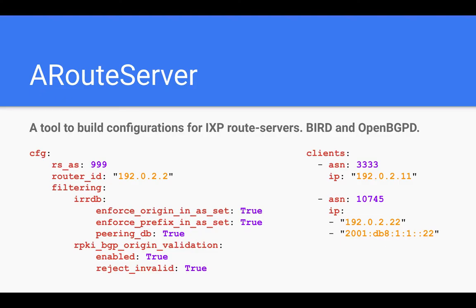So what is ARouteServer? It's an open source software tool to build configuration files for internet exchange point route servers. It provides an easy way to define an abstract policy, set the features desired by the internet exchange operator like IRR filtering and RPKI origin validation, define the list of clients with their autonomous system numbers and IP addresses, and automatically create configuration files for BIRD or OpenBGPD.